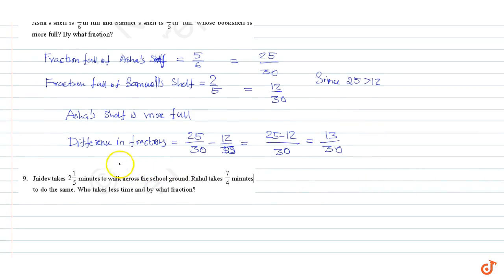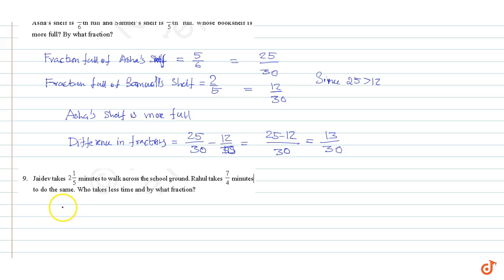Question number nine: Jadev takes two and one by five minutes to walk across the school ground. Rahul takes seven by four minutes to do the same. Who takes less time and by what fraction? Time taken by Jadev is equal to two one by five minutes.